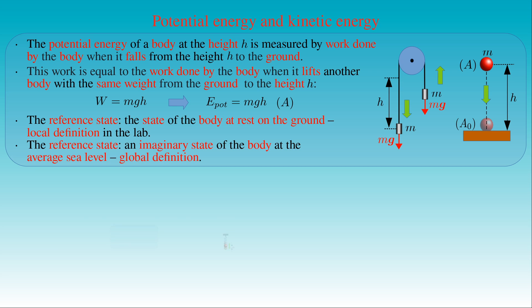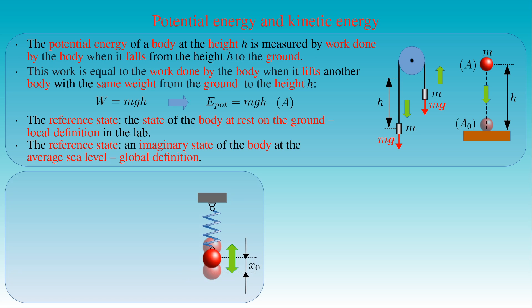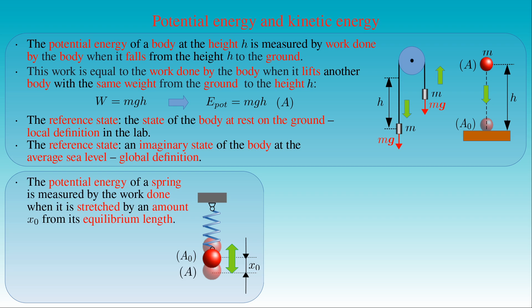As already mentioned, a stretched or compressed spring is also able to do work, where the equilibrium state of the spring is chosen as the reference state A0. The potential energy of a stretched spring in the state A with the displacement X0 is measured by the work done when it is stretched by an amount X0 from its equilibrium length. Since this work is equal to 1/2 times the spring constant K times the square of the displacement X0, the potential energy of the spring in state A is also given by ½ K X0 squared.